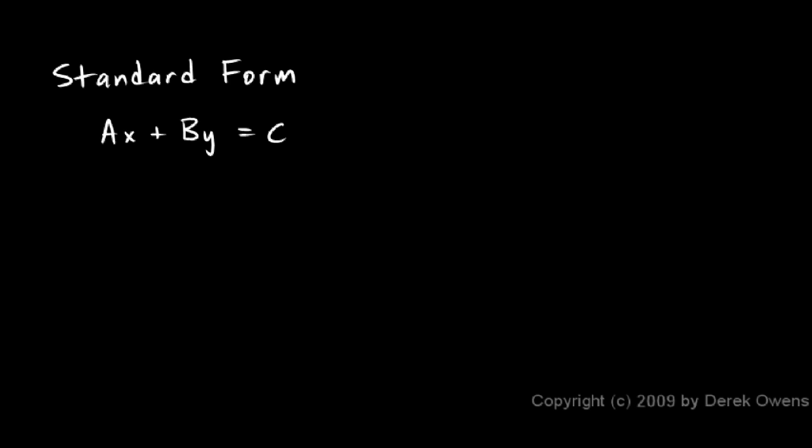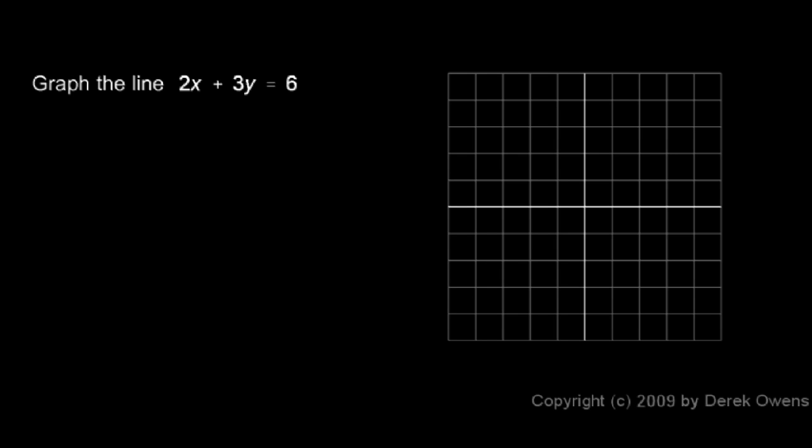I'll show you some examples of how to graph a line in standard form. Suppose we're told to graph the line 2x plus 3y equals 6. One way to graph this is to find the intercepts, and here's how we do that.